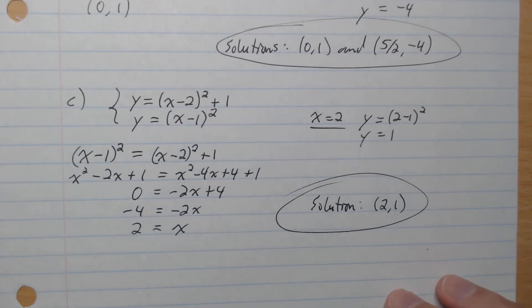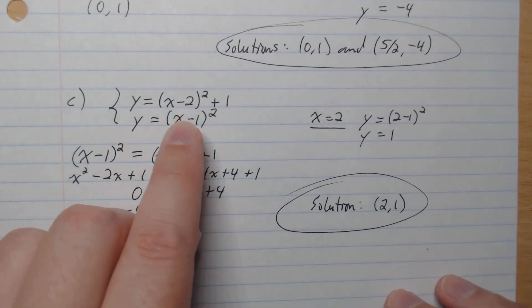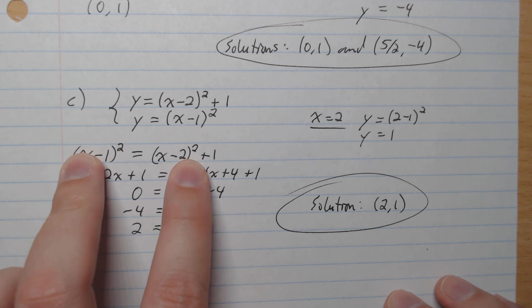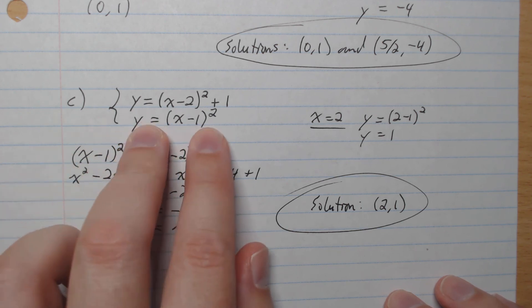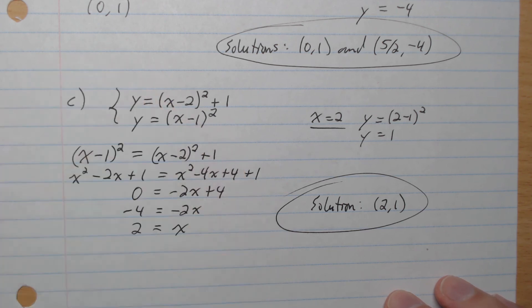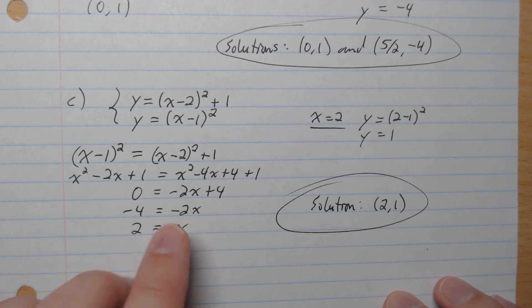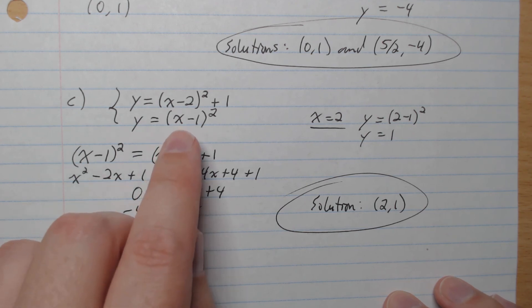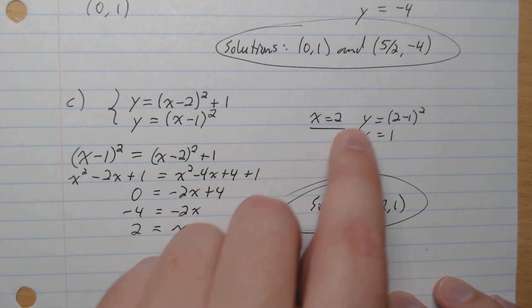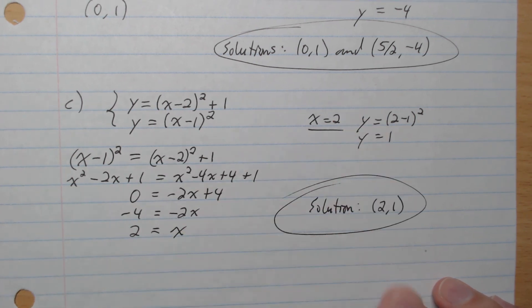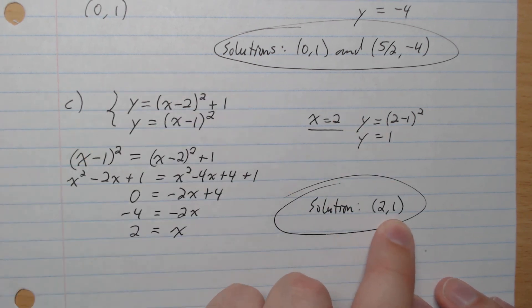Part C: substitute the second equation into the first equation, expand both sides, put it all on one side, and we get x equals 2. Plugging x = 2 into the second function gives y = 1, so the solution to the system is (2, 1).